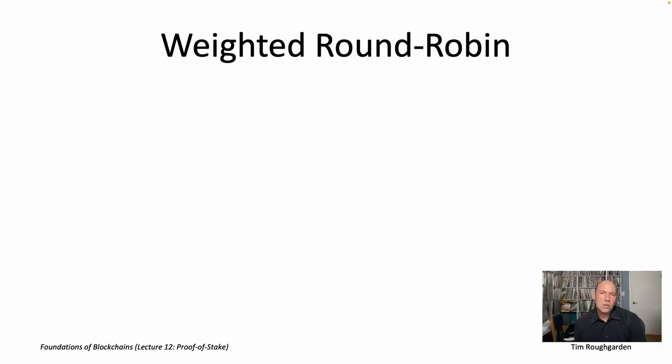So what I want to do in this opening video of part two is just give you a really quick and dirty solution which roughly approximates sampling from this list proportional to stake. And it is a solution that has been used somewhat successfully in practice, namely weighted round robin.